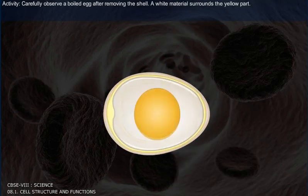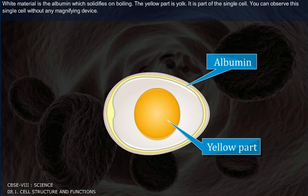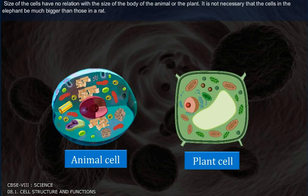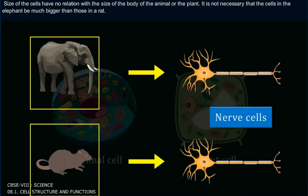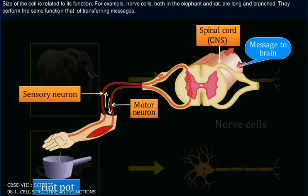Activity: Carefully observe a boiled egg after removing the shell. A white material surrounds the yellow part. The white material is albumin, which solidifies on boiling. The yellow part is the yolk, which is part of the single cell. You can observe this single cell without any magnifying device. The size of cells has no relation to the size of the body — it is not necessary that cells in an elephant be much bigger than those in a rat. Cell size is related to its function; for example, nerve cells in both elephant and rat are long and branched and perform the same function of transferring messages.